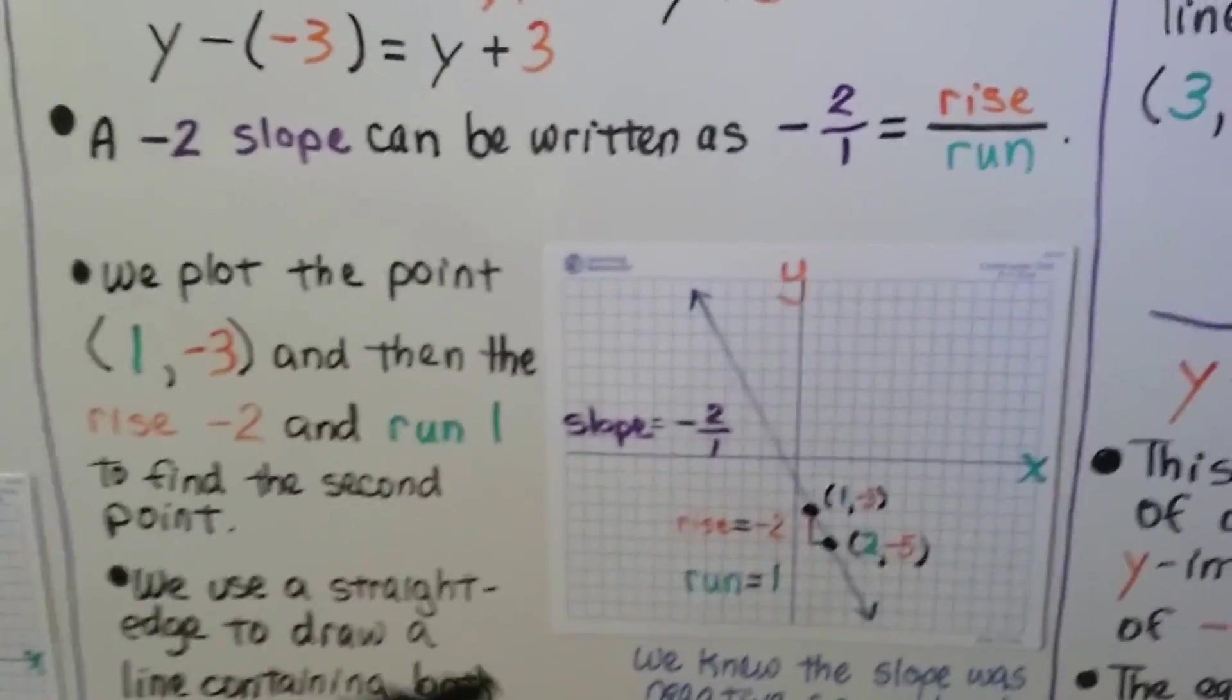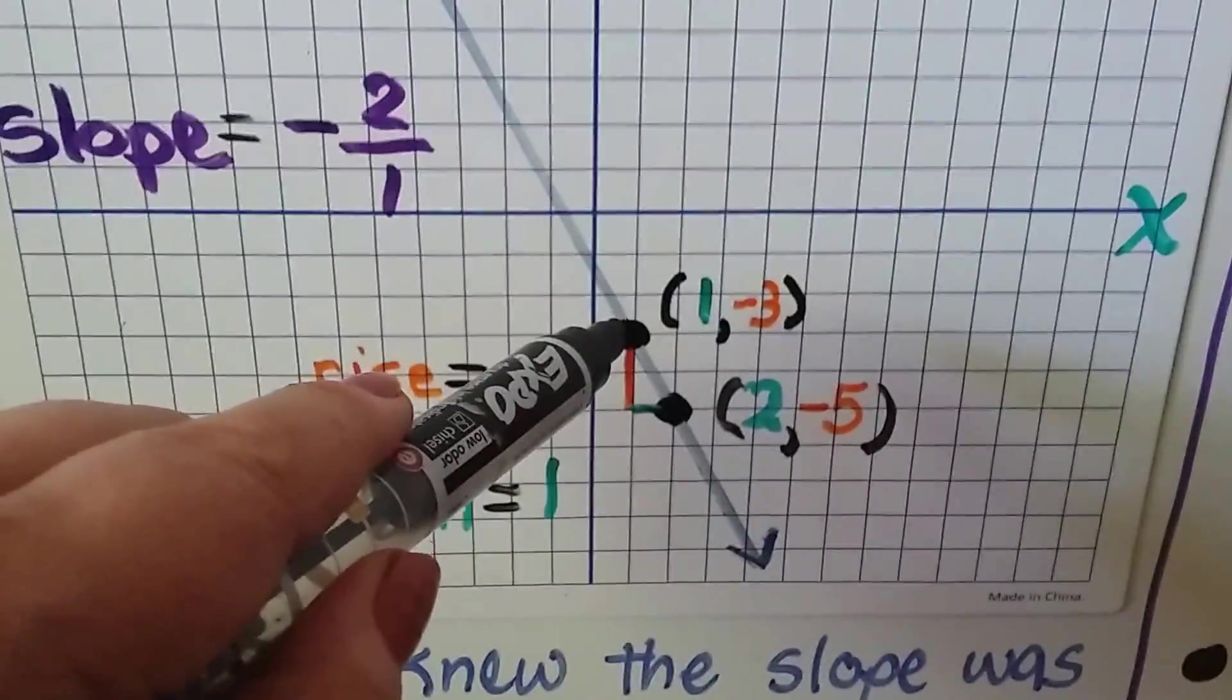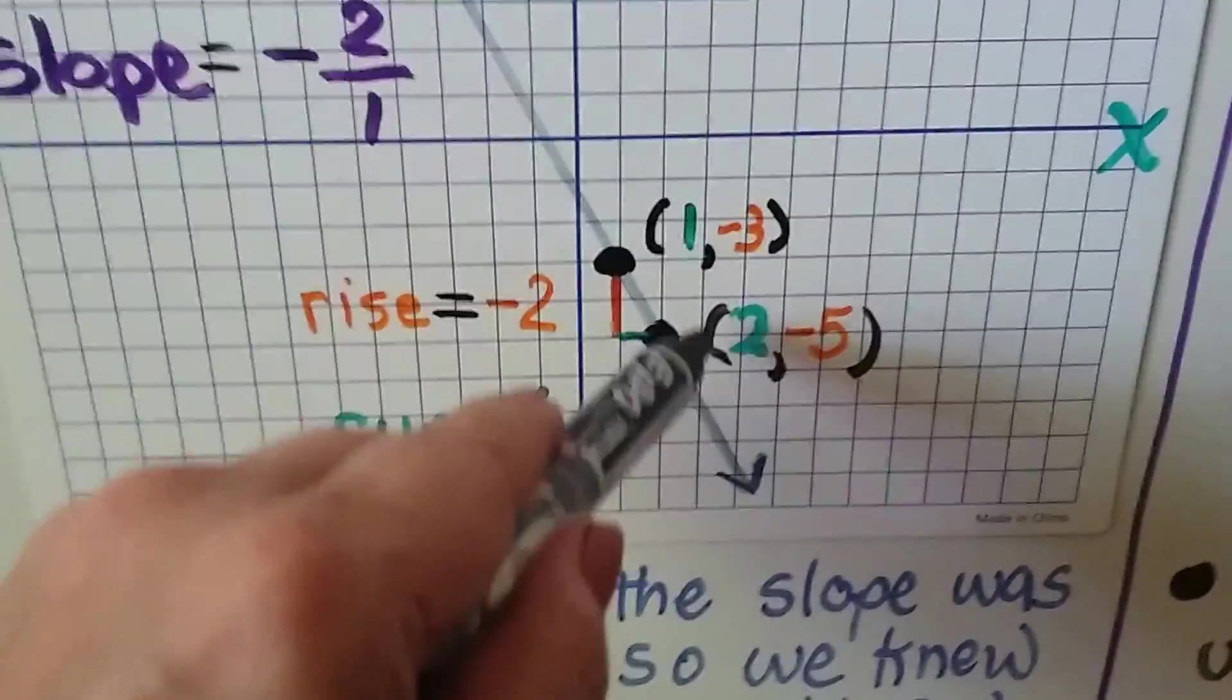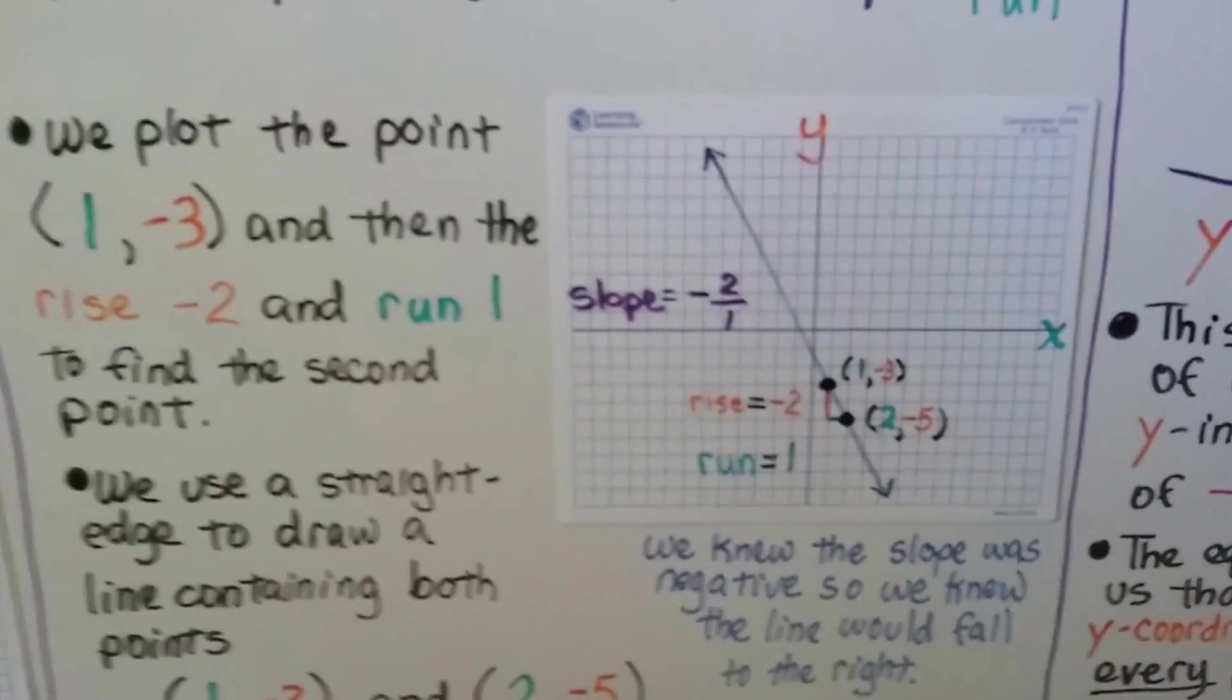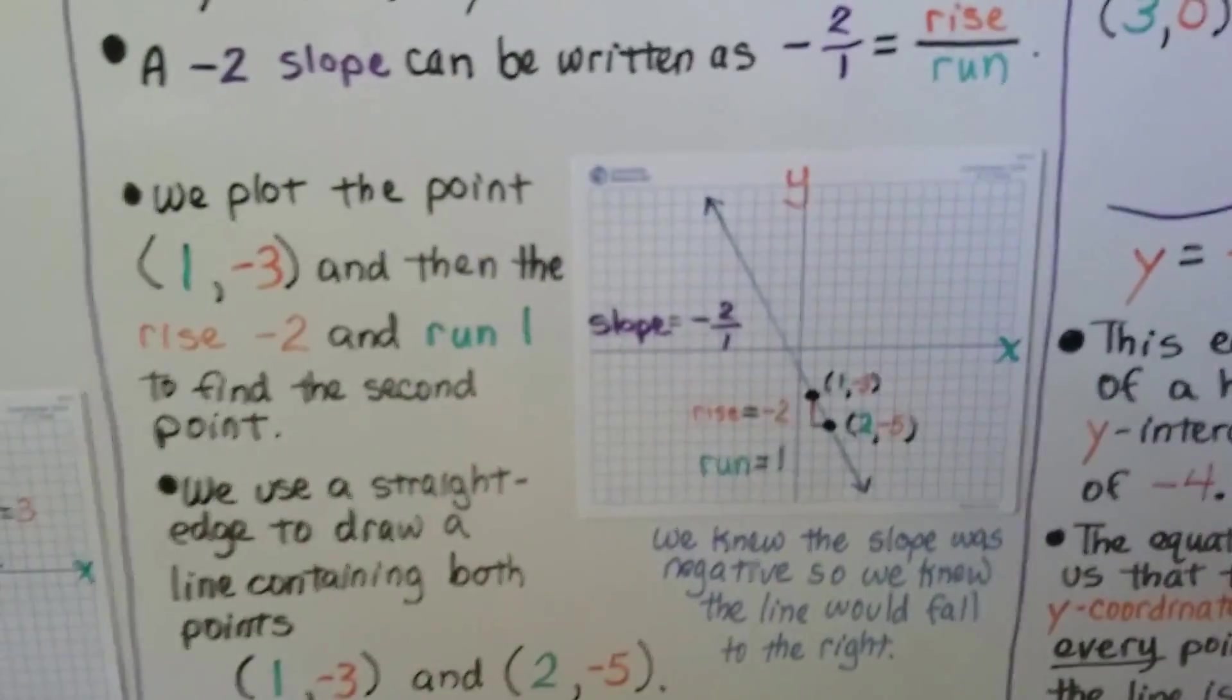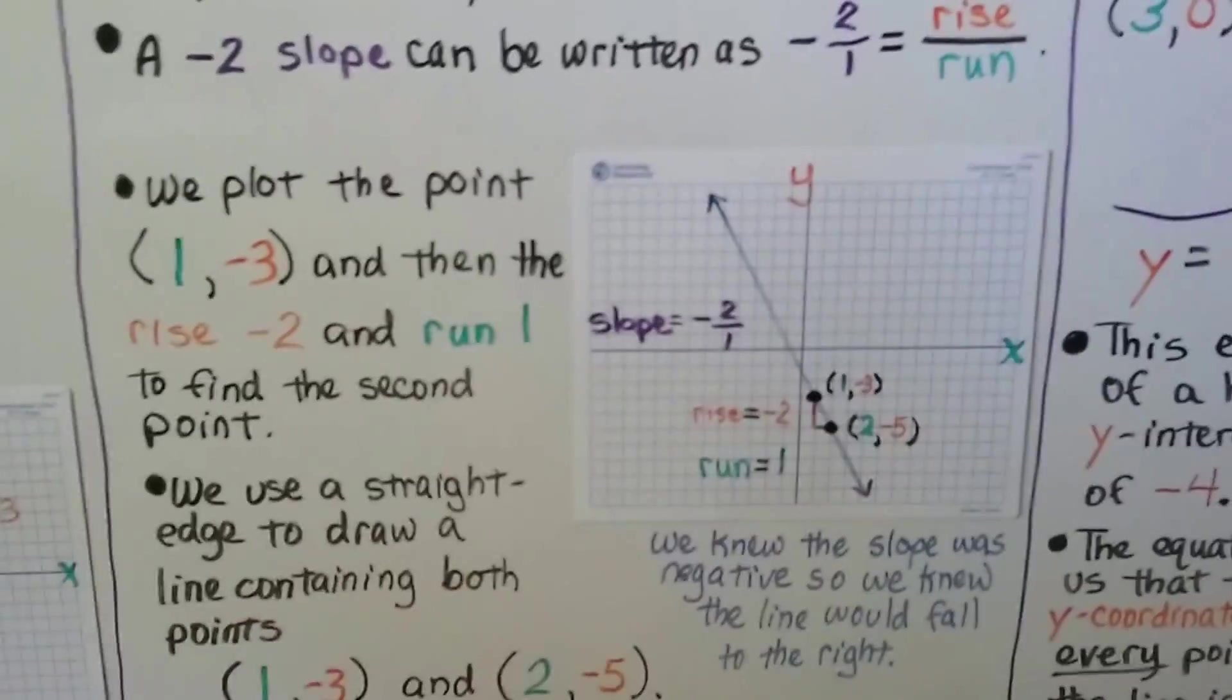Now, we know our rise and run are a negative 2 and a 1. From this (1, -3), we're going to have a negative rise, negative 1, negative 2. Our run is a 1, so we're going to move over and we put a dot there at (2, -5). That's our second point. We use a straightedge to draw a line containing both points. Remember that when we have a negative slope, the line is going to be falling to the right. That will help you to know if you're making it correctly.